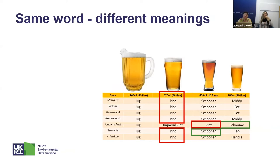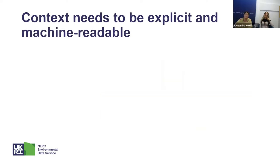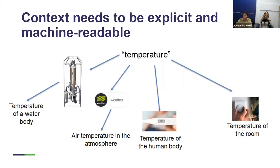The human brain is very good at understanding context implicitly, but machines will always need context to be explicit. For example, just writing 'temperature' in the header of a column of a CSV file is not enough to make these data readily understandable by automated software. We need to capture both the term 'temperature' and its context in machine readable format — in this case, where the temperature was measured, for instance temperature of a water body measured by a sensor in the sea.